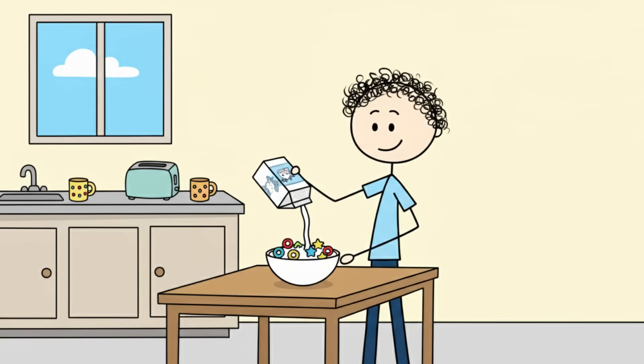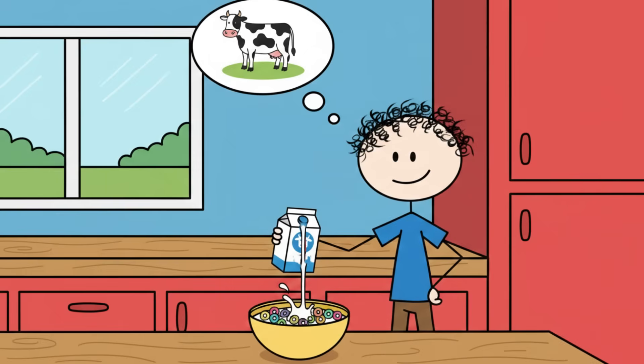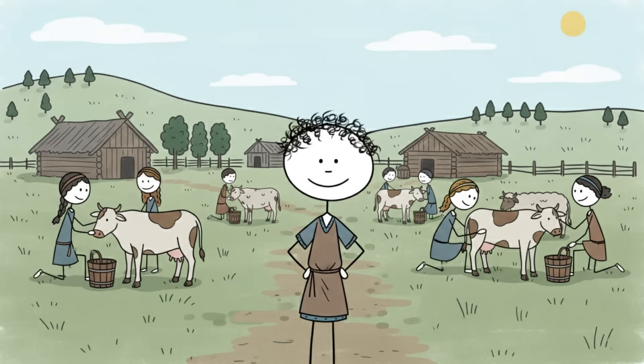So if you can pour milk over your cereal this morning without instantly regretting every life choice, you're basically a genetic mutant, a walking, breathing testament to one of the biggest, strangest, and most delicious historical moments that literally rewrote the human digestive tract. Your body is a trophy for the domestication of cows.